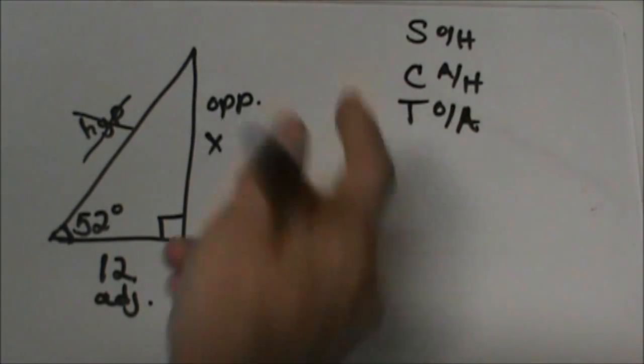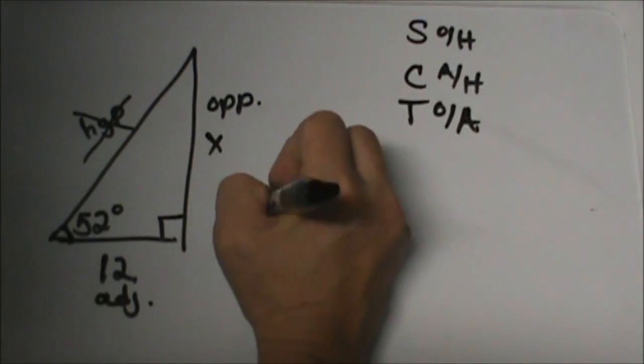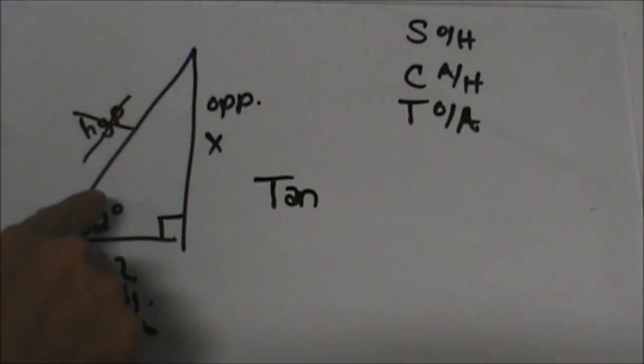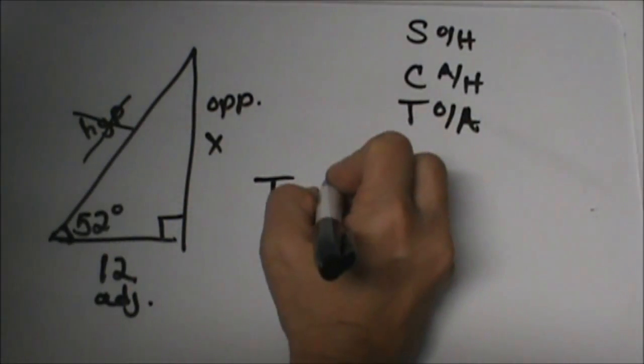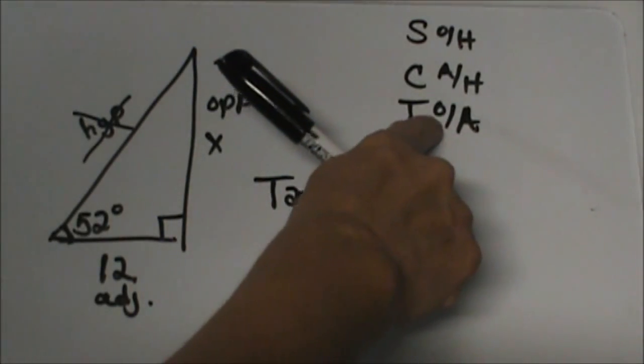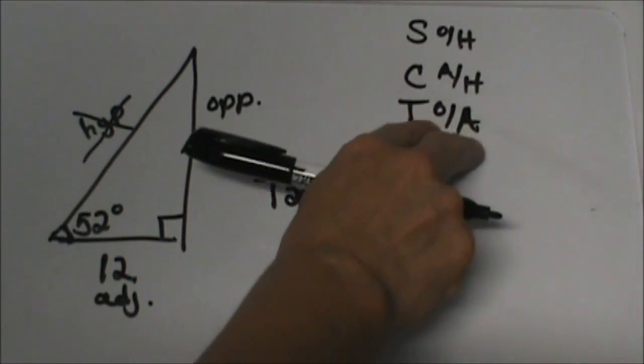So let's set up the tangent of theta. Theta in this case is our reference angle, so we're taking the tangent of 52 degrees, and that's equal to the opposite side over the adjacent side. So now we're going to write a ratio.